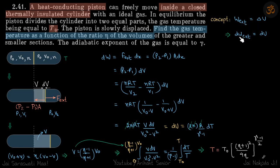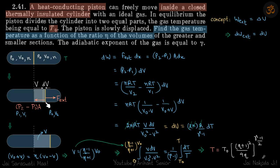Differentiating, dW_external = dU. If you move the piston by a slight amount dx, the work done by the piston equals the incremental change in internal energy. So dW = F_external · dx = (P₂ − P₁) · A · dx. The net forces on the piston are balanced, which is why these forces are equal. We then write A·dx as dV.